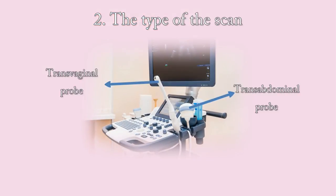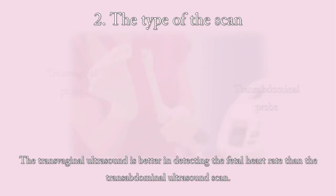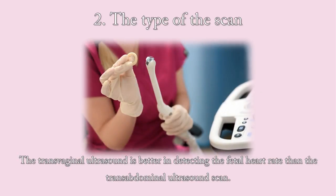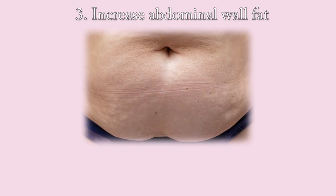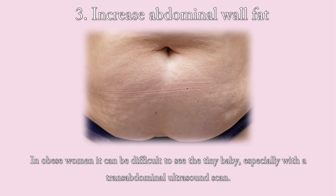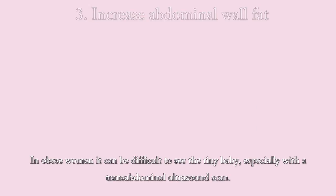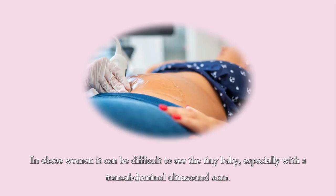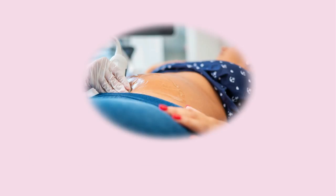Another possible cause is the type of scan used. The transvaginal ultrasound is better at detecting the fetal heart rate than the transabdominal ultrasound scan. Increased abdominal wall fat due to obesity can also make it difficult to see your tiny baby, especially with a transabdominal ultrasound scan.